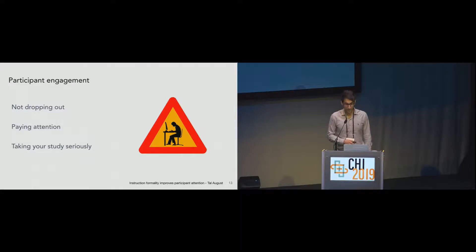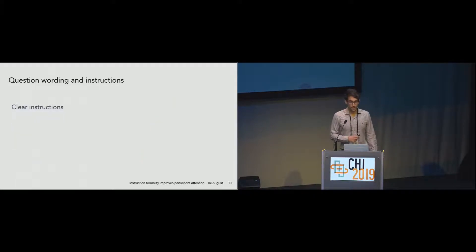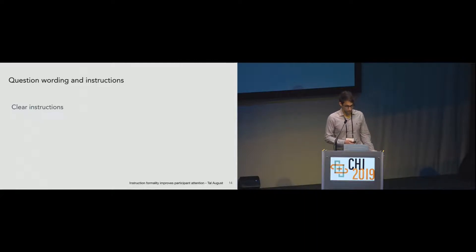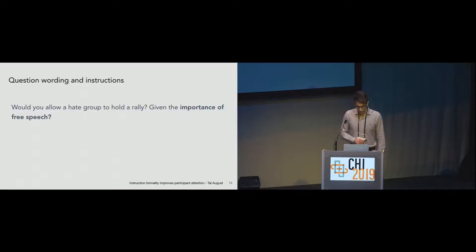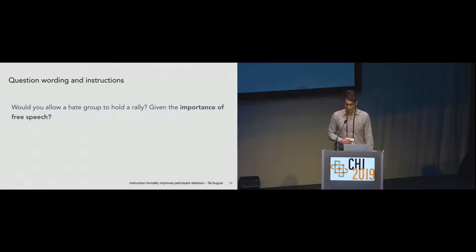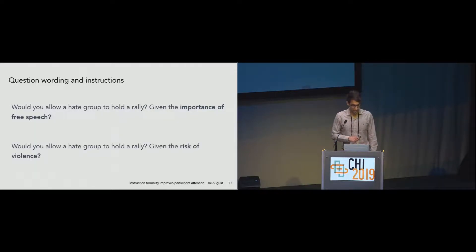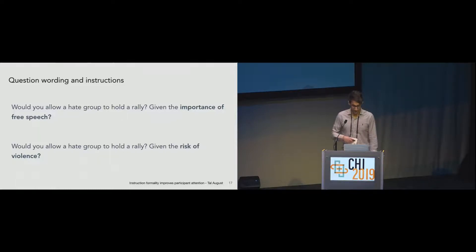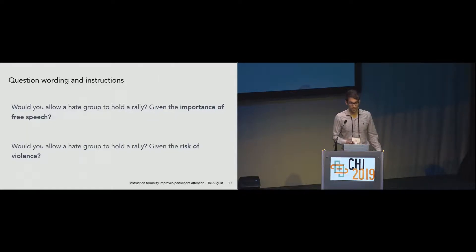All these issues with participant engagement can damage the reliability of the data you're collecting. One way studies can improve data quality is paying attention to the wording of their questions and instructions. Clear instructions with examples and questions that avoid framing or leading participants are important. For example, asking participants if they would allow a hate group to hold a rally given the importance of free speech leads to almost twice as many saying yes compared to asking the same question framed around the risk of violence — even though they're asking the exact same thing.